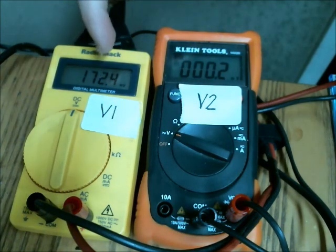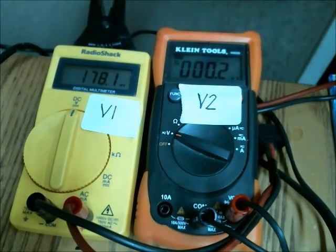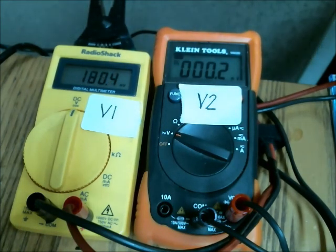So here's V1, that's the voltage on the input of the regulator, and this is V2, the voltage on the output of the regulator. Now presently, there's no charge in the capacitors, so I'm going to turn the motor.